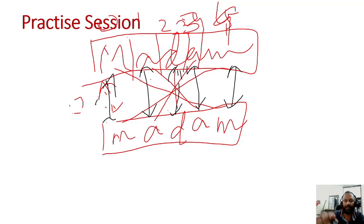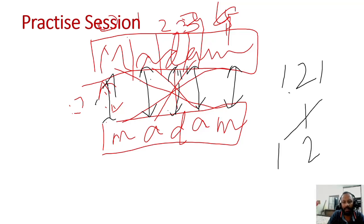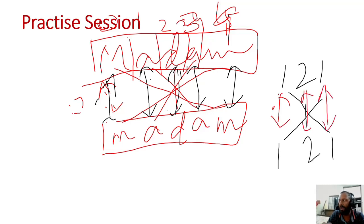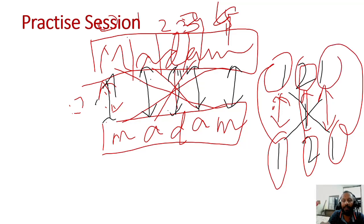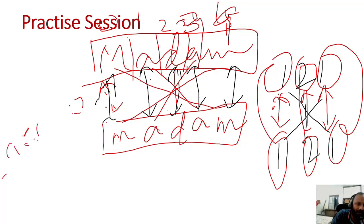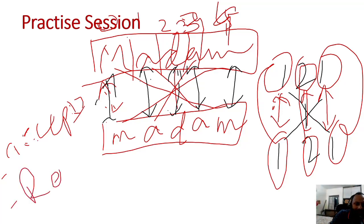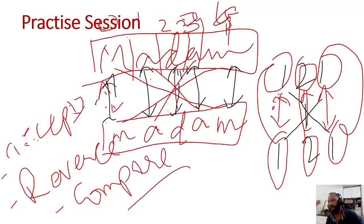किसी भी चीज़ पर - number में भी अगर हमने कोई number लिया है तो इसको हम इस block को उल्टा करके लिखेंगे। And then we will check whether this is matching with this, whether this is matching with this, and whether this is matching with this. अगर ये तीनों के तीनों मैच कर जाते हैं तो palindrome है। So three steps: सबसे पहला - accept कीजिए number को। दूसरा - reverse कीजिए। और तीसरा - compare कीजिए। इन तीन steps में palindrome निकल आएगा।